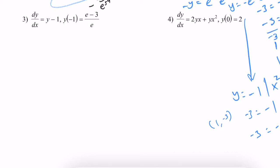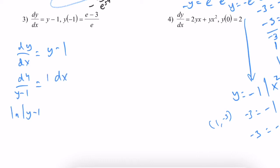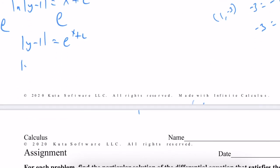The problems always follow almost the same formula. For dy over dx equals y minus 1, we separate variables: dy over (y minus 1) equals dx times 1. That gives natural log of absolute value of y minus 1 equals x plus c. Taking e of both sides: absolute value of y minus 1 equals e to the x plus c, which we rewrite as c1 times e to the x.